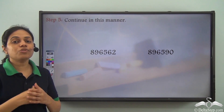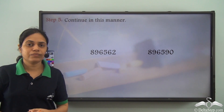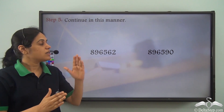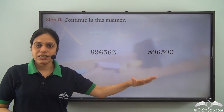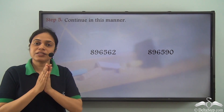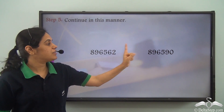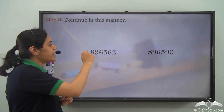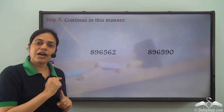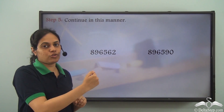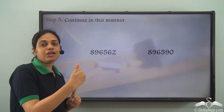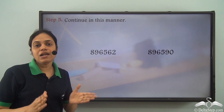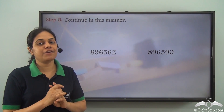I need to continue in this manner: first count the number of digits; if they are the same, compare the first digits; if they are equal, go to the next digit on the right. Keep moving to the next digit on the right until you get two different digits.